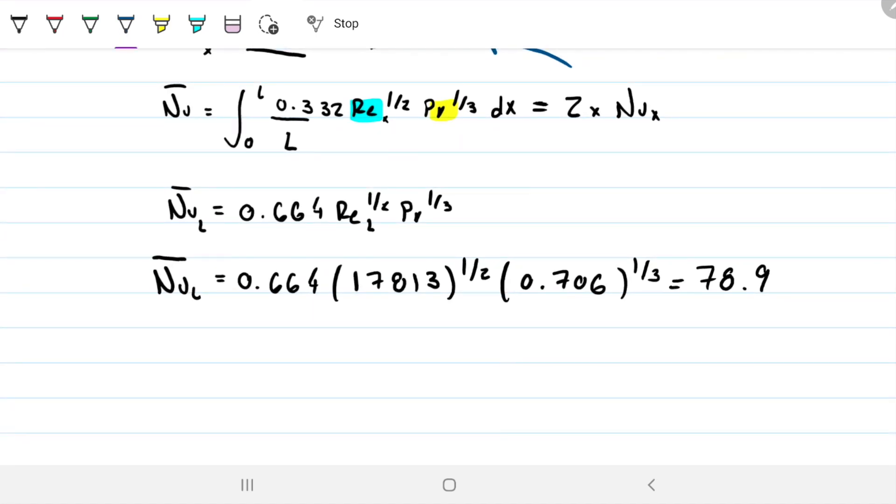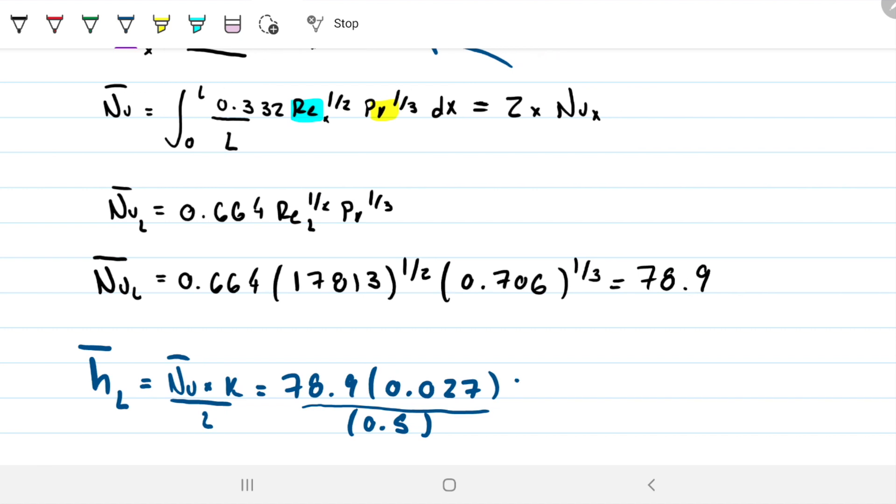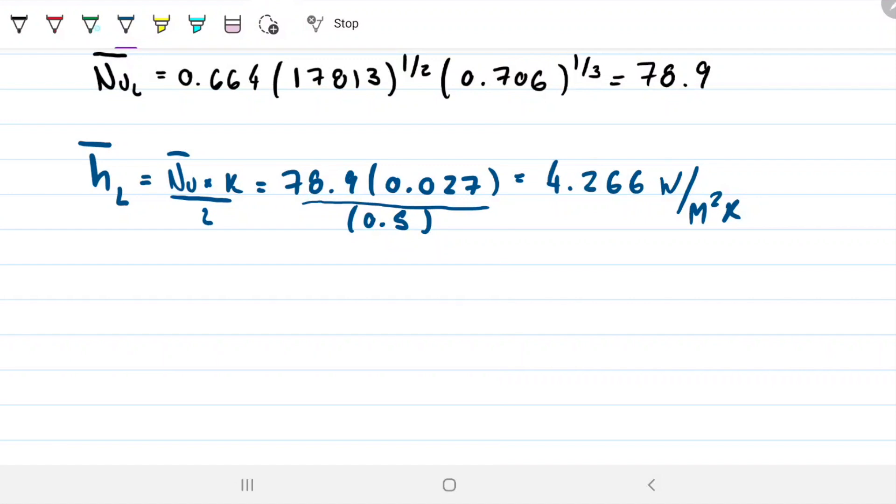Which will just be my average Nusselt times my k divided by my L. So 78.9 times 0.027 divided by 0.5, and that gave me 4.26. It's already too many decimal places for what we're looking for.